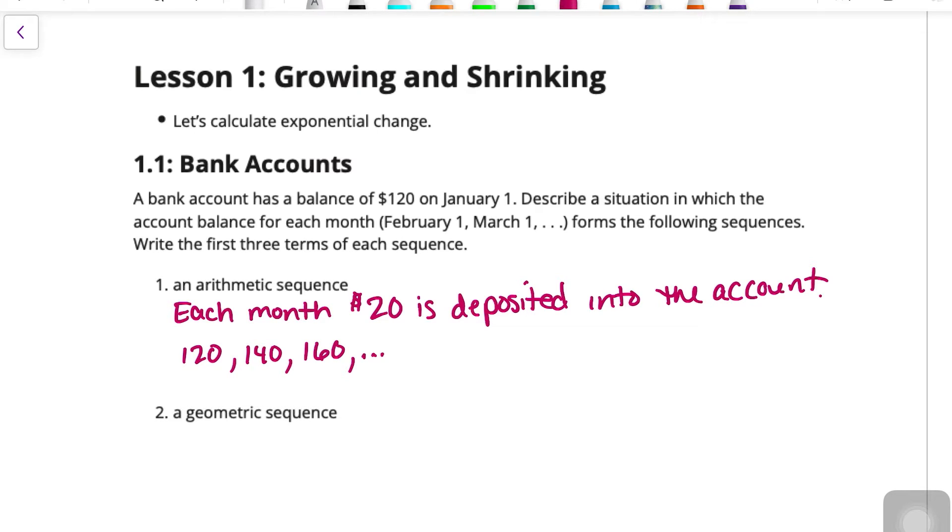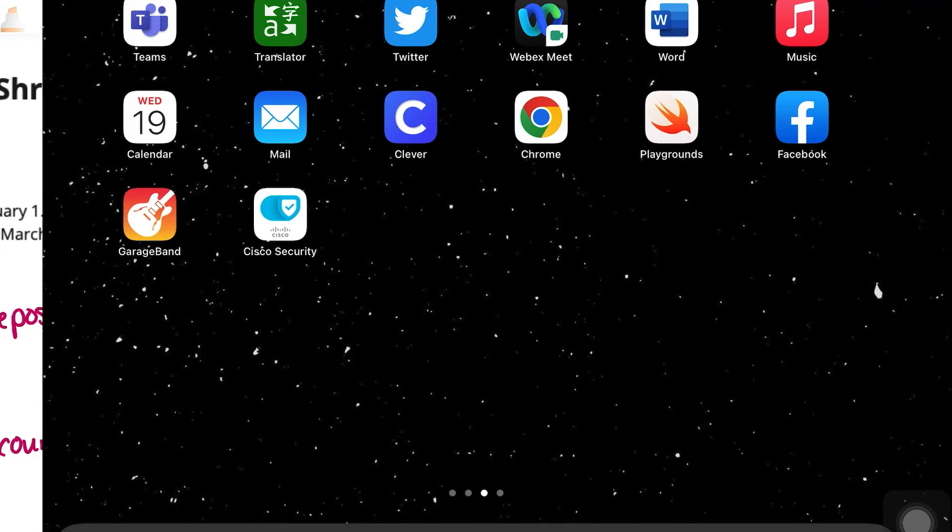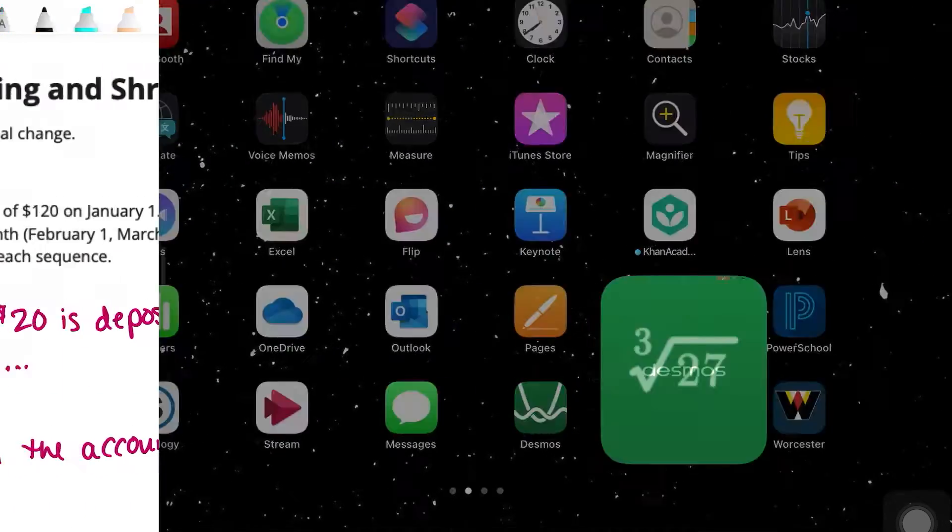All right, so let's take a look at the geometric sequence. We can say that each month the account earns 10% interest. Okay, so the first month there's $120, and then the next month is going to be 110% of that. And so what we can do is we can bring in our calculator.